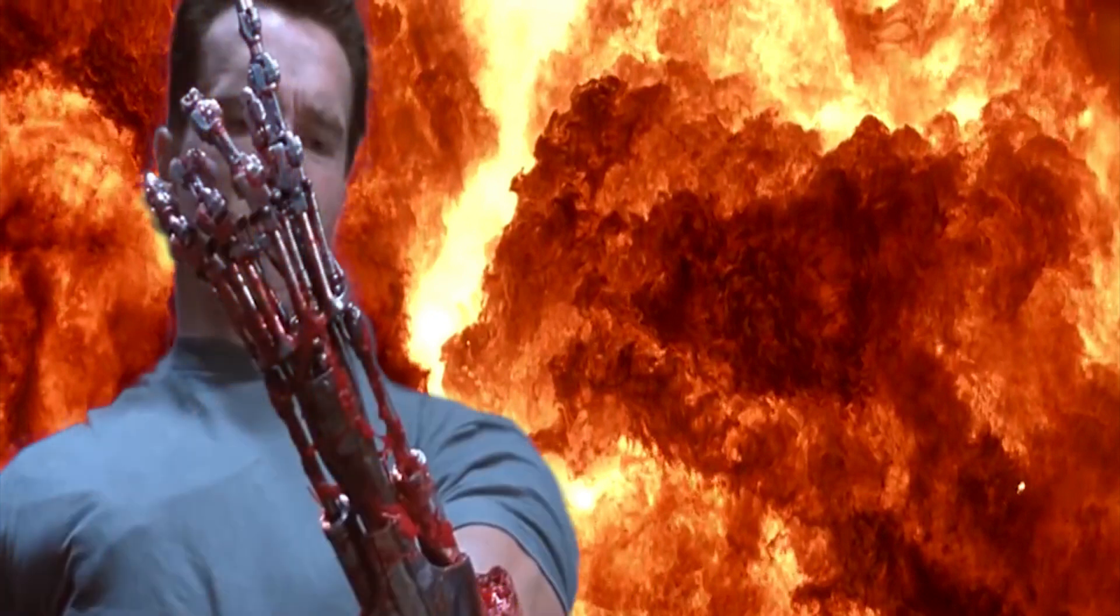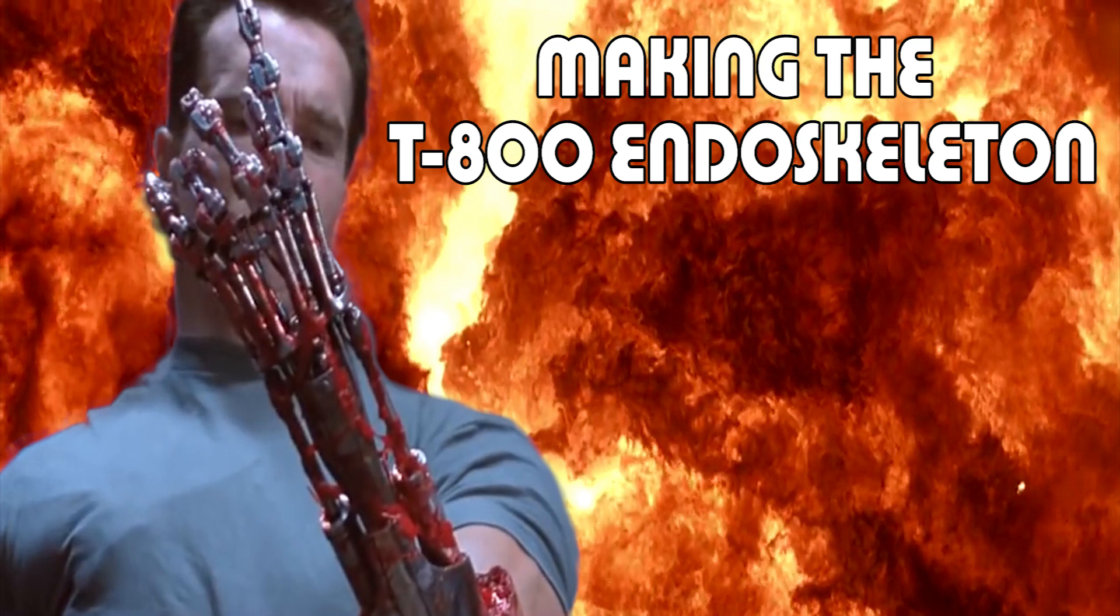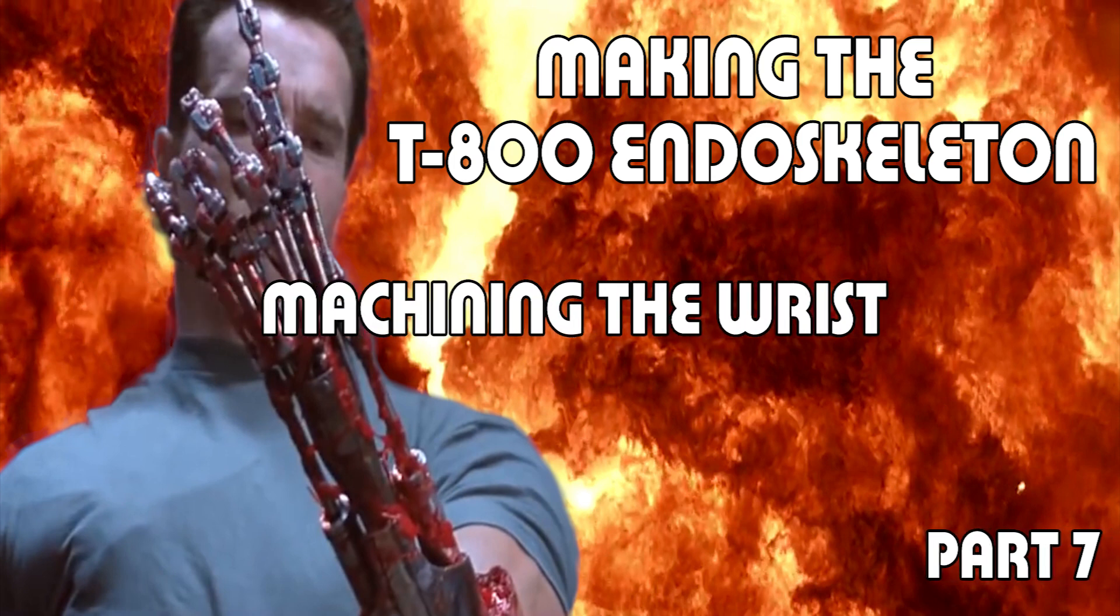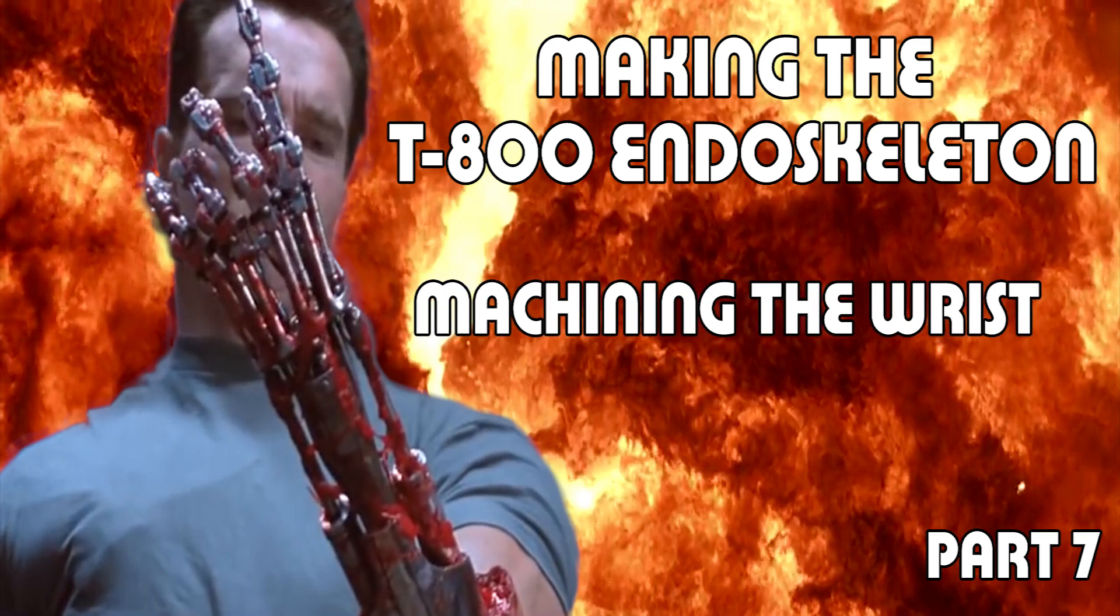Hi everyone, it's Ken here. In this episode of making the T-800 endoskeleton, we're going to be making the wrist plate, which is the part that connects the forearm to the fingers.